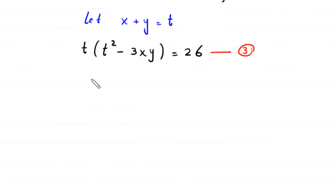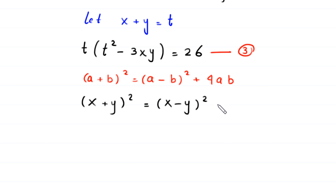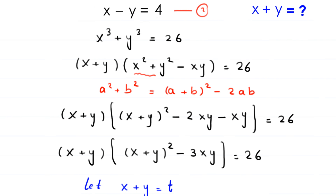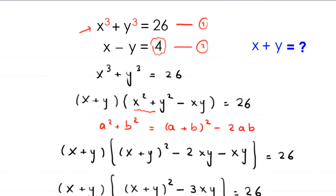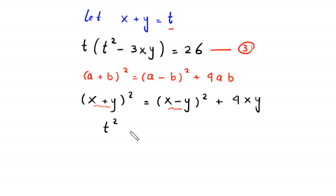Now, by using the algebraic identity a plus b whole squared equals a minus b whole squared plus 4ab, we can write in terms of x and y: x plus y whole squared equals x minus y whole squared plus 4xy. We replace x plus y with t and x minus y with 4 from equation 2. So this equation becomes t squared equals 4 squared plus 4xy.